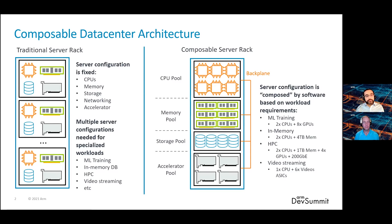This has led to the innovations which made large data centers transition from the traditional architecture to this new composable architecture shown on the right-hand side. The advantage of the composable rack architecture is that you can, at runtime, using software-defined principles, virtually collate a server that fits your application needs. You have different pools of resources — a CPU pool, a memory pool, a storage and acceleration pool — all interconnected using a backplane or some sort of interconnect across the rack.